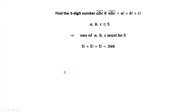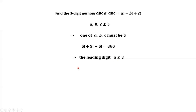If all digits are 5, then 5 factorial plus 5 factorial plus 5 factorial equals 360. This means the leading digit A is less than or equal to 3 — that is the upper bound for A. Therefore, we only have three options for A: A equals 1, A equals 2, or A equals 3.